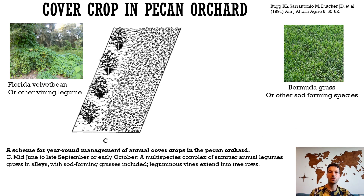Along with annual legumes, seed mixtures should include sod-forming warm season grasses that create a grass carpet after mowing cover crops for easy nut harvesting. Additional mulching and weed suppression under trees can be achieved if cover crop residues are mowed from alleys into tree-row strips, for example using side-discharge mowers. Unmowed cover crop stands, for example of mature hairy vetch with rye, can also suppress warm season weeds including perennial grasses for several weeks into summer.